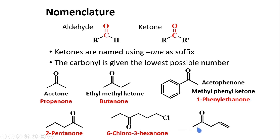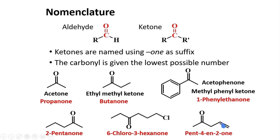Again, in this compound the numbering will be based on the carbonyl group. So the name of this compound is dec-4-en-2-one, because the double bond is at position 4: 1, 2, 3, 4 — and the ketone suffix gives '-2-one.'